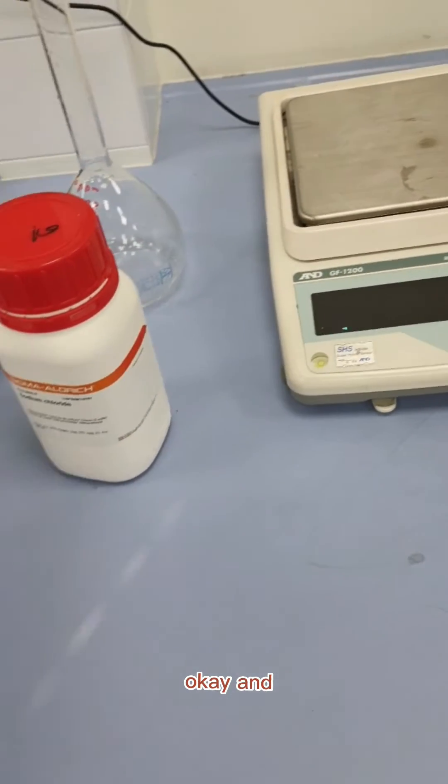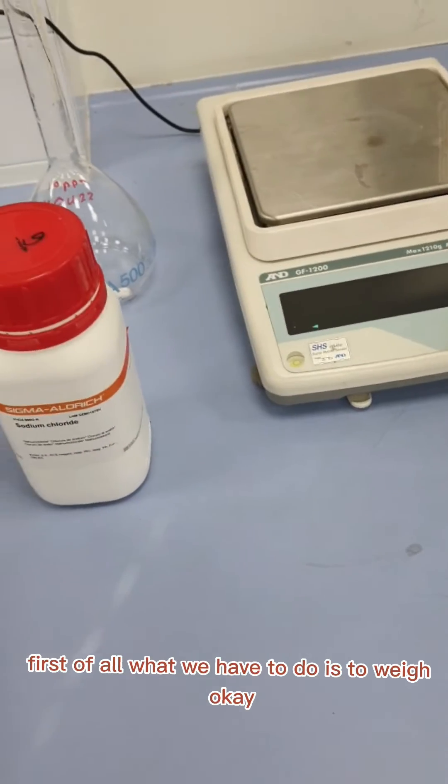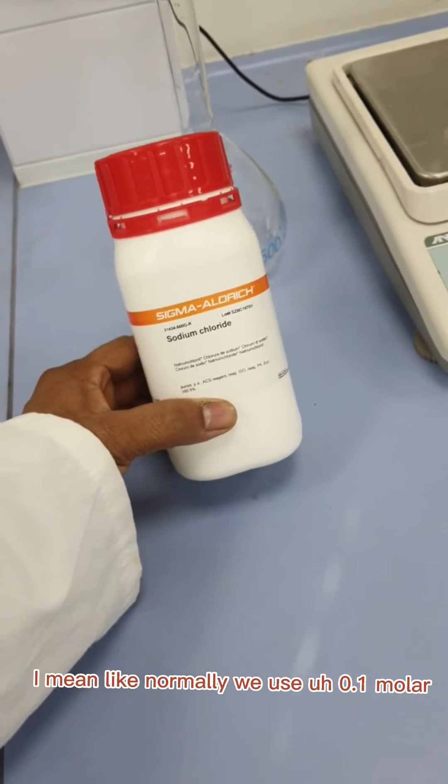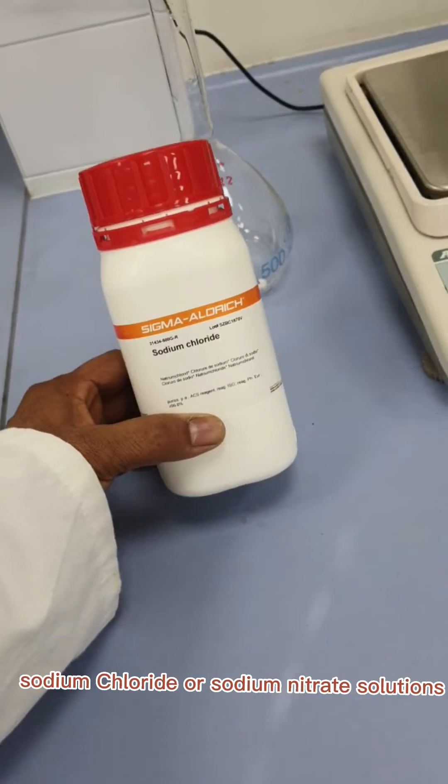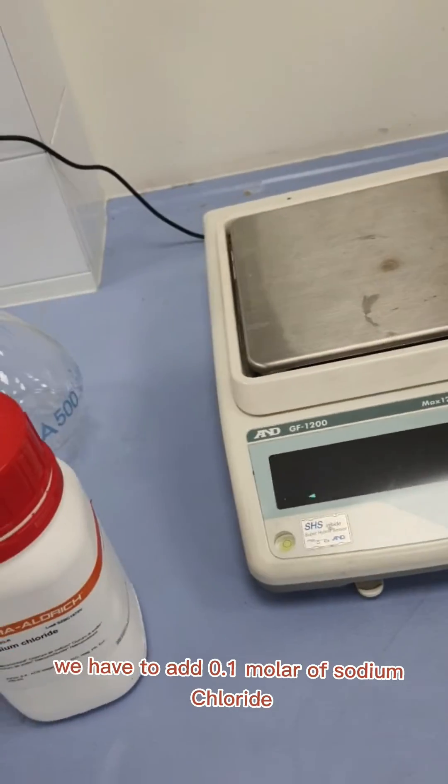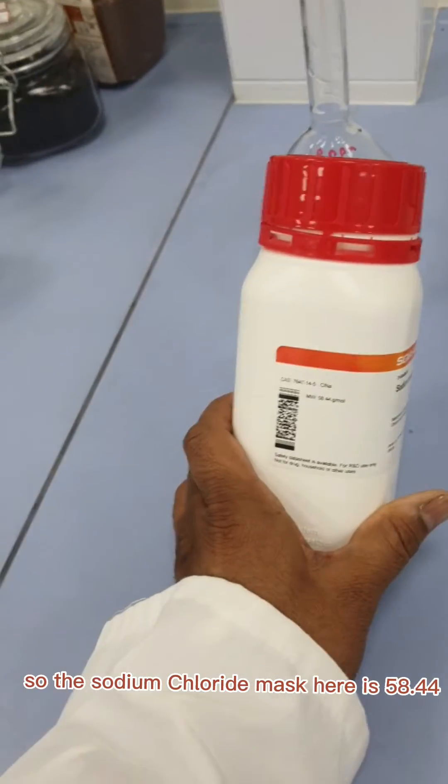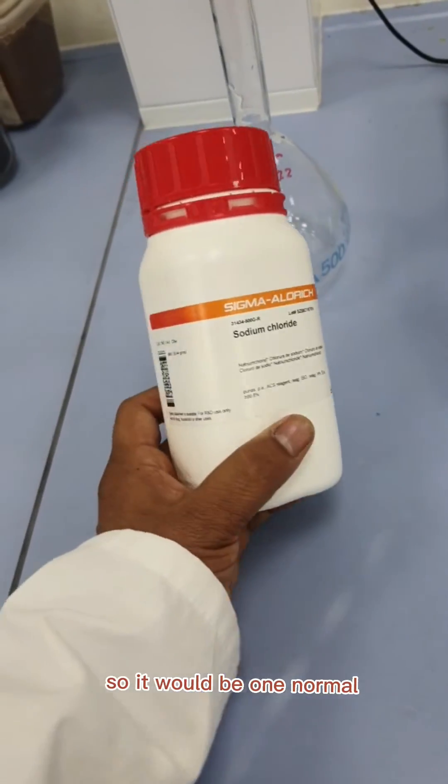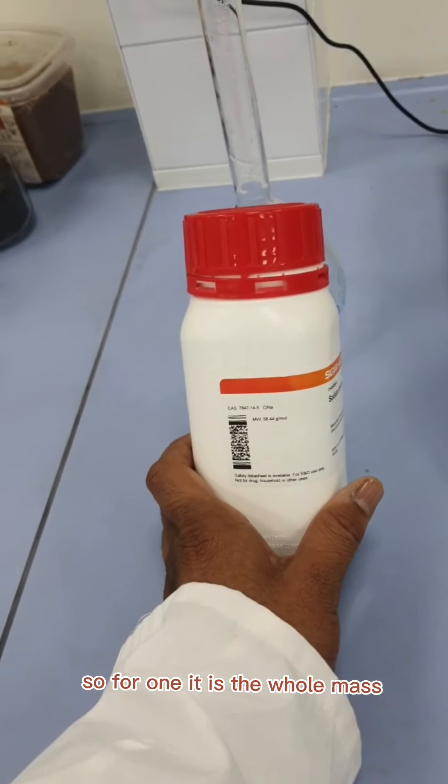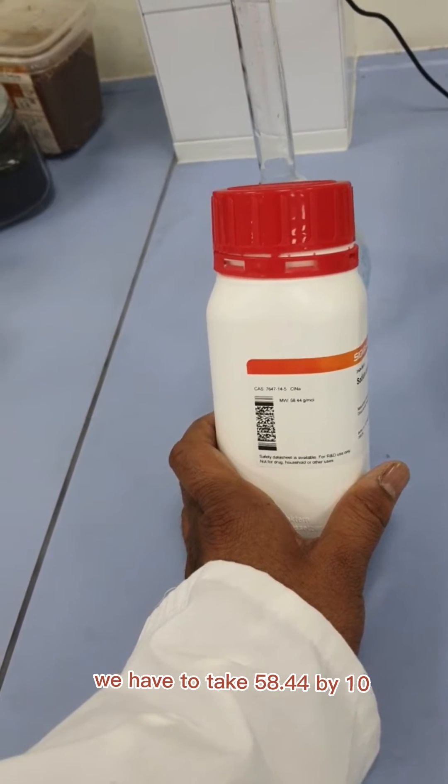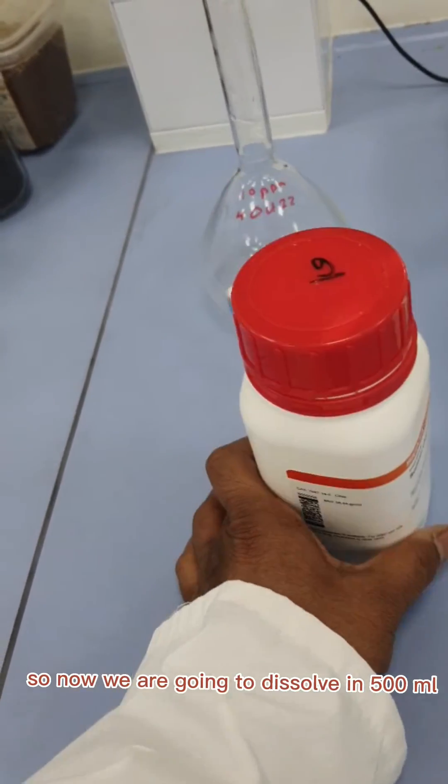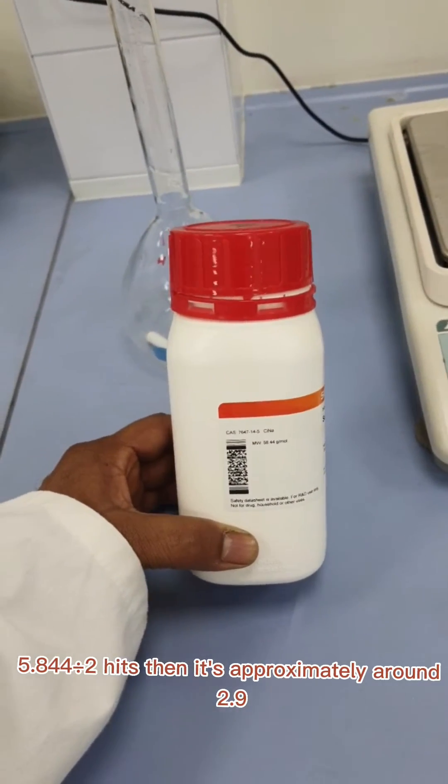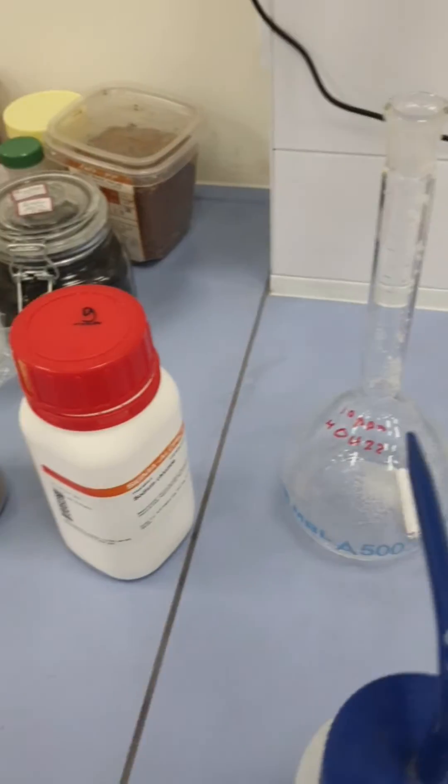For this point of zero charge experiment, first of all we have to weigh the right amount of sodium chloride or sodium nitrate solution. We need to add 0.1 molar sodium chloride. The sodium chloride mass is 58.44, so if we dissolve 58.44 in one liter it would be one molar. For 0.1 molar we take 58.44 divided by 10. Since we're dissolving in 500 ml, we take 58.44 divided by 2, which is approximately 2.9 grams.